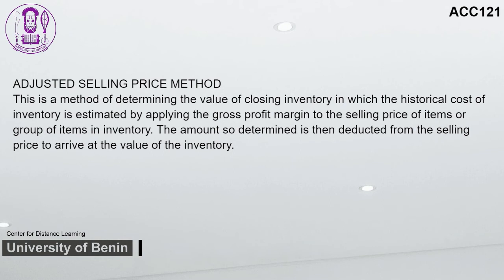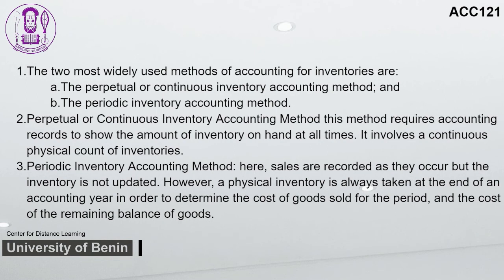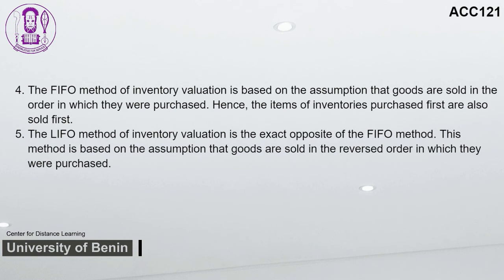Summary for Study Session 8: The two most widely used methods of accounting for inventories are the Perpetual (Continuous) Inventory Accounting Method — which requires records showing inventory on hand at all times with continuous physical counting — and the Periodic Inventory Accounting Method — where sales are recorded as they occur but a physical inventory is taken at year end. The FIFO method assumes goods are sold in the order they were purchased; items purchased first are sold first. The LIFO method is the exact opposite — goods are sold in the reversed order of purchase.